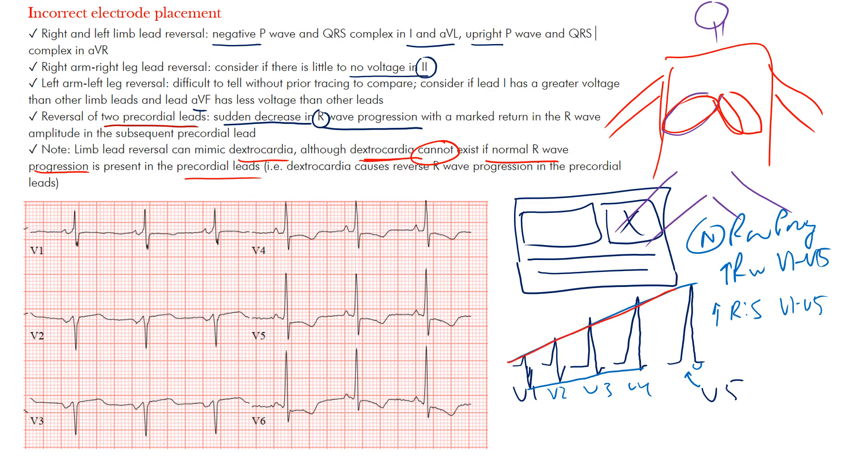But what I want you to notice, dextrocardia cannot exist if you have normal R wave progression in the precordial leads. So remember, if you have this normal R wave progression, if the heart's on the right side of the body, meaning you should, if you go from right to left, you should not see an increase in this R wave amplitude. If anything, you're moving away from the forces. So maybe it's going in the opposite direction. So dextrocardia, as actually mentioned here, causes reverse R wave progression in the precordial leads, meaning that they're going in the opposite direction. And hopefully that makes sense because now the heart's here, the left ventricle's the dominant force, and it's now on the right side of the body, moving away from V1 through V5, which would be over here.